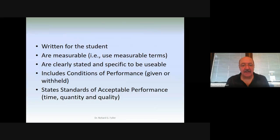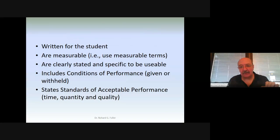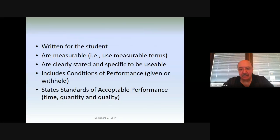If objectives are not written correctly, they just become unusable and people say, 'I wrote my behavioral objectives, but here's what I'm going to really teach.' If objectives are written properly, there is a connection; if not, there's a disconnect. So they must be written clearly and very specifically to be usable. The next rule requires what we call conditions of performance — what you're going to give or withhold from students. Objectives also have to state standards of acceptable performance: time, quantity, quality — how well someone has to do something.